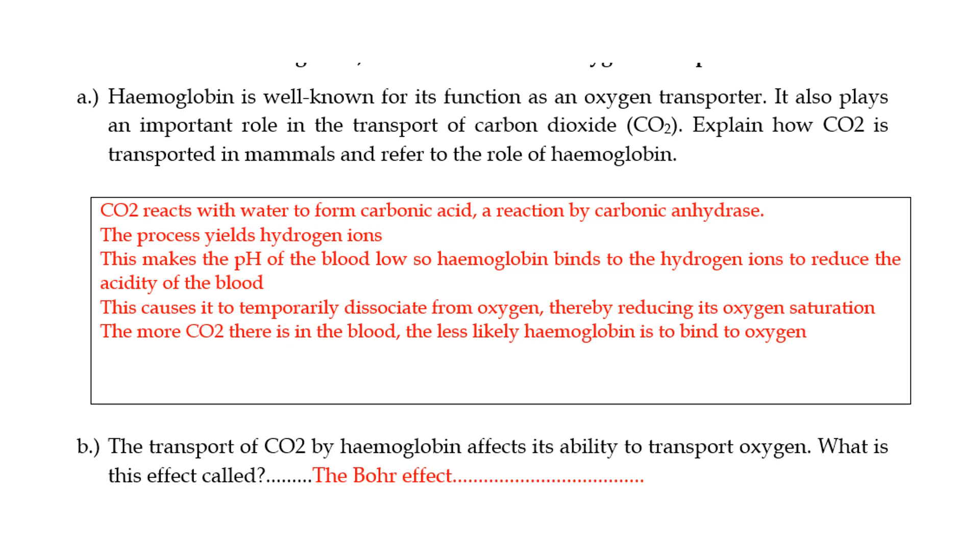In doing that, it forms what we call hemoglobinic acid. Hemoglobinic acid is usually written as HHB, which is basically hydrogen ions bound to hemoglobin. When you have HHB, it is unable to bind to oxygen. So it will dissociate itself from oxygen, thereby reducing its oxygen saturation and continue to work until the pH of the blood is stable or is at a pH that is proper. So during that time, what you will find is that it's not binding to oxygen as well or as much as it can. What this effect is called is the Bohr effect. And on the next question, I'm going to explain this in a bit more detail.